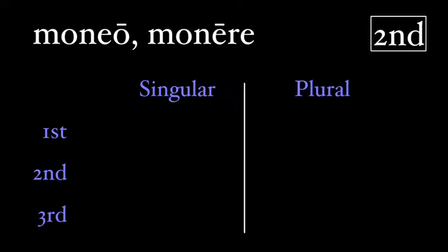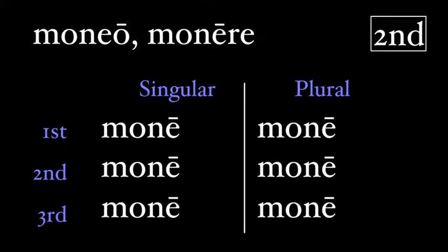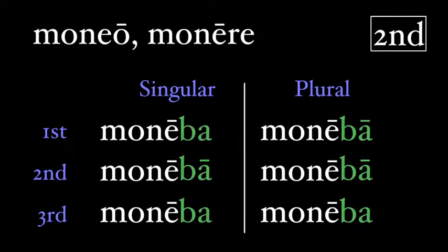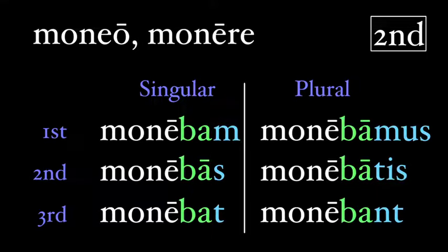The same rules work for the second conjugation — verbs that end in a long '-ēre' in their second principal part, like 'moneo, monēre.' We find our present stem 'mone', add the 'ba', and then our personal endings: monebam, monebas, monebat, monebamus, monebatis, monebant.